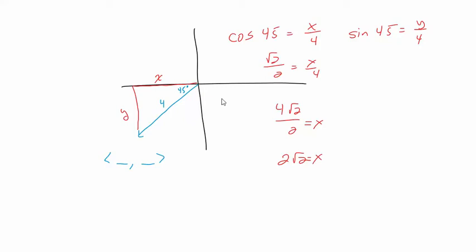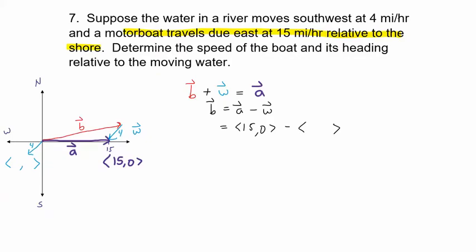Multiplying both sides by 4 gives x = 2√2. Since this is in the third quadrant — southwest direction — both components are negative: x = −2√2 and y = −2√2. Those negative signs indicate the southwesterly direction.